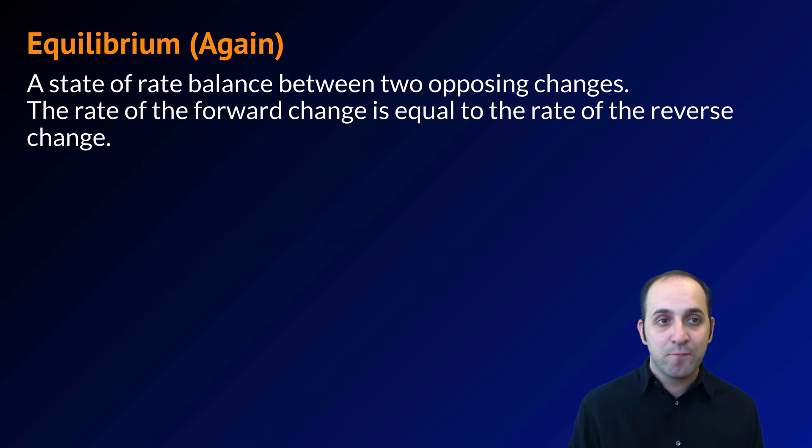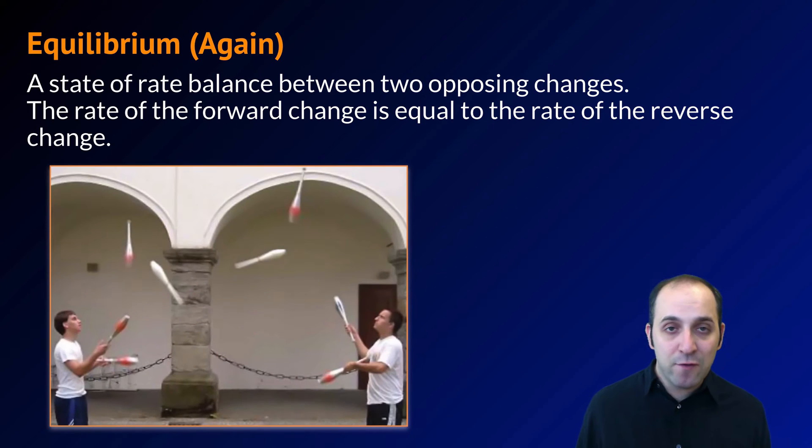Let's go in and take a look at what this means. We've talked about equilibrium before in our class, but equilibrium is just a rate of balance between two opposing changes. The rate of the forward change is equal to the rate of the reverse change.